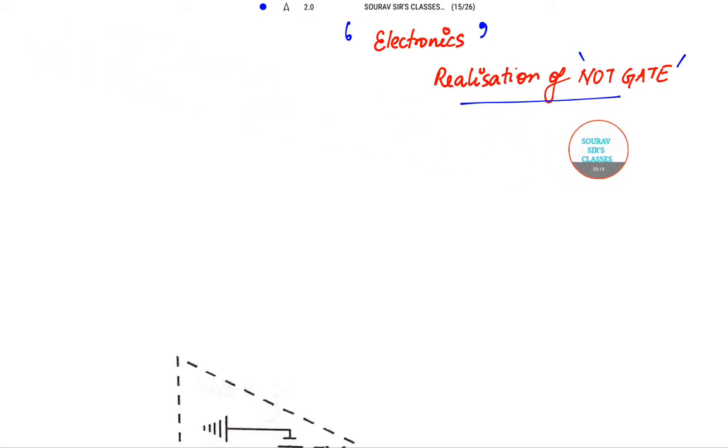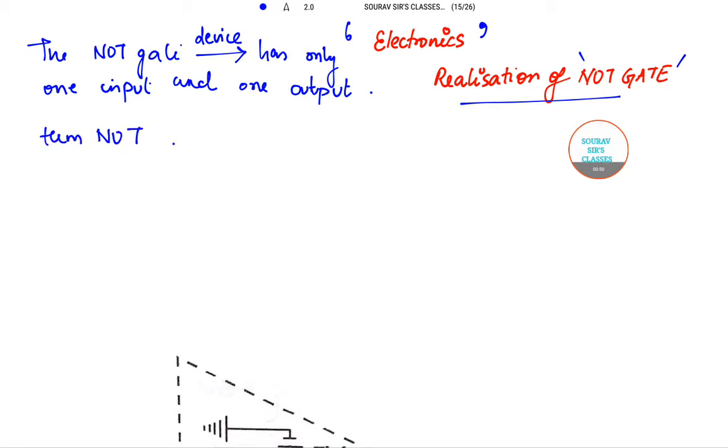A little bit of introduction. The NOT gate is actually a device which has only one input and one output. This is the basic definition.